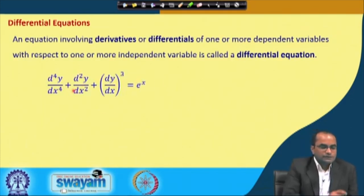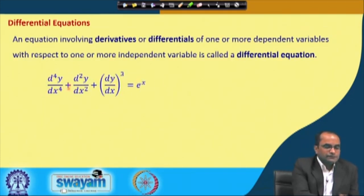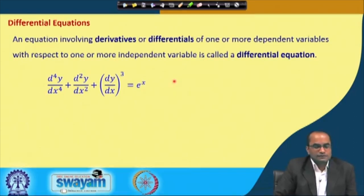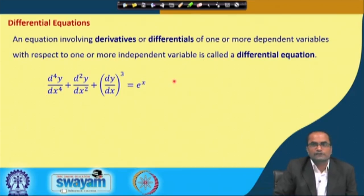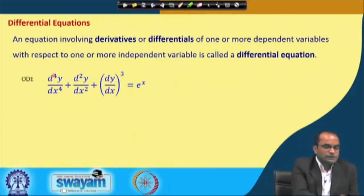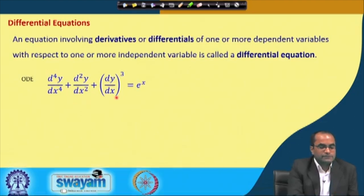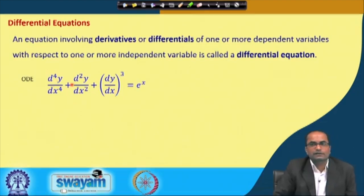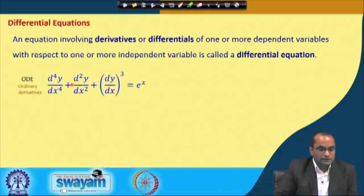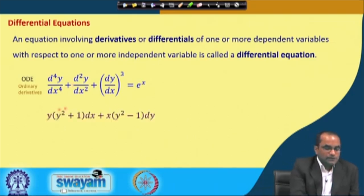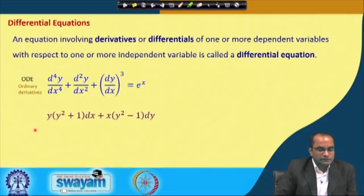Here are examples of differential equations. We have derivative terms involved in these equations and therefore we call them differential equations. These are ordinary differential equations because the derivatives are ordinary — meaning we have only one independent variable, x, while y is the dependent variable.